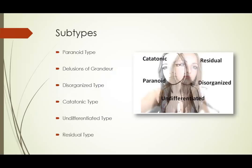The disorganized type usually occurs at an earlier age with a gradual, insidious onset characterized by disorganized speech, disorganized behavior, and flat or inappropriate affect. These people are reclusive and preoccupied with fantasies, emotional indifference, and infantile behavior. They often have a silly smile and inappropriate shallow laughter. Speech is difficult to understand and may include baby talk, childish giggling, and repetitious use of similar-sounding words or rhyming. They may also display odd facial grimaces or sudden inexplicable laughter and weeping.